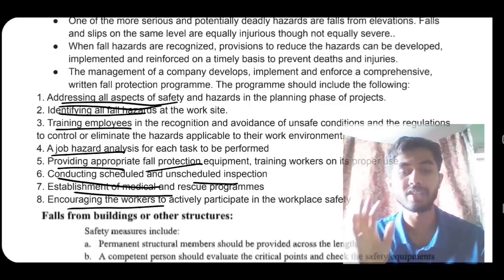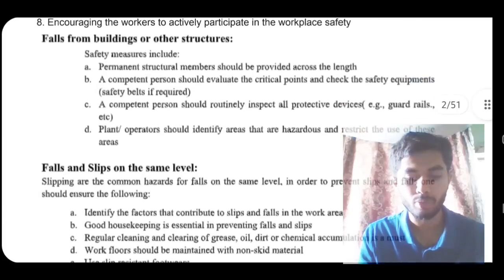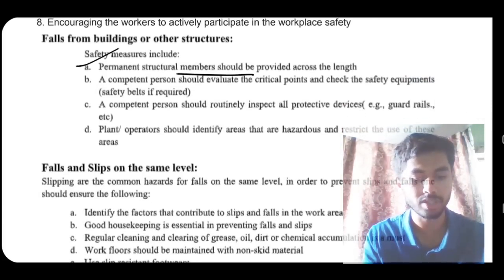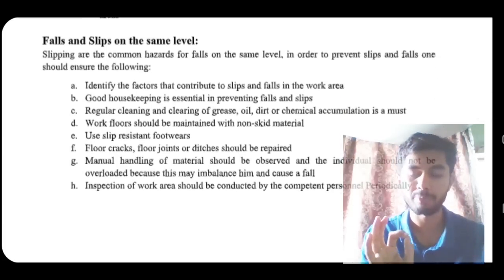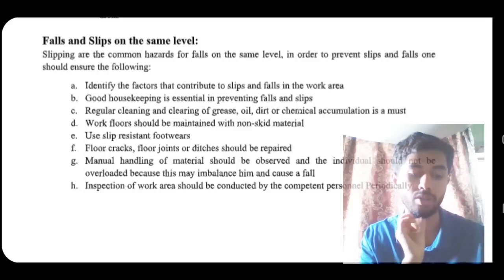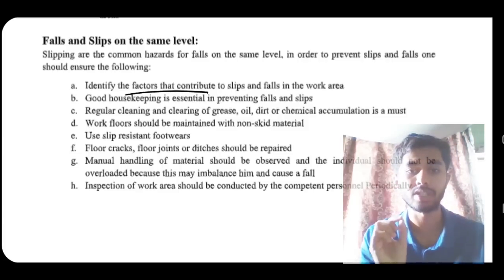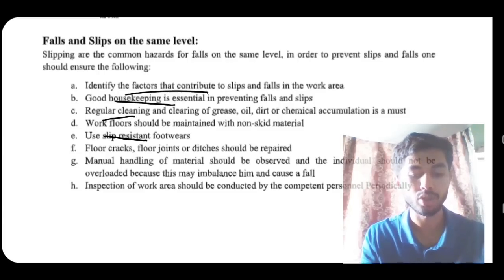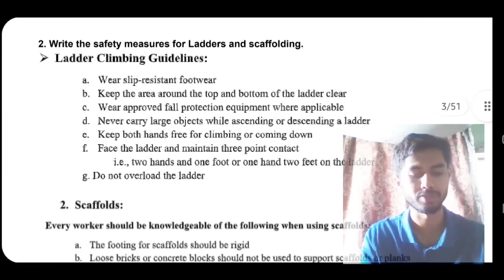The fall protection program should consist of: addressing all aspects of safety, identifying all fall hazards, training employees, conducting job hazard analysis, providing appropriate fall protection equipment, conducting scheduled and unscheduled inspections, and establishing medical safety. For falls from buildings, a competent person should be assigned to routinely inspect all productive equipment. On the same level: identify contributing factors, maintain good housekeeping, use slip-resistant footwear, repair floor cracks, and ensure inspection of work areas.